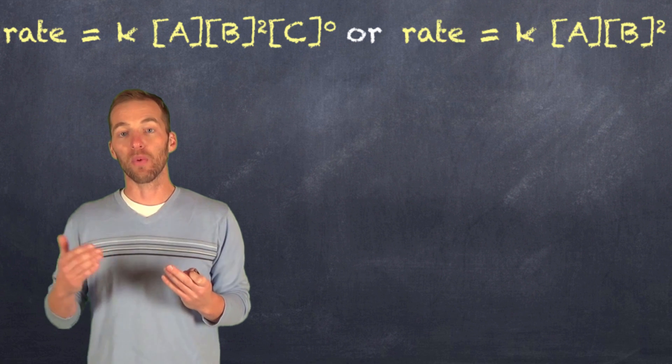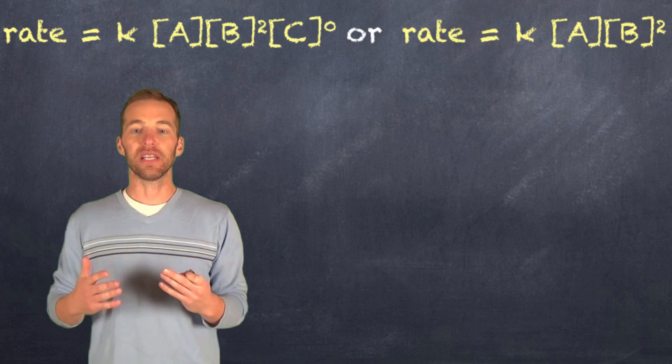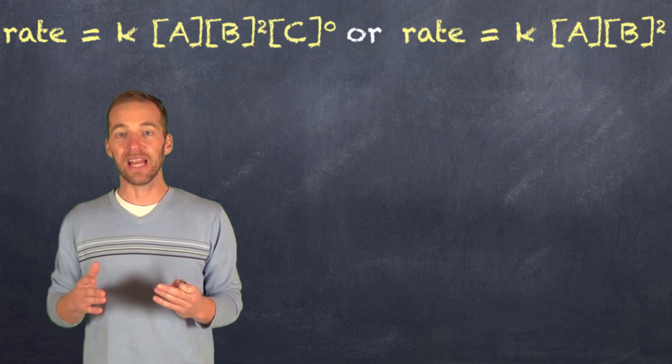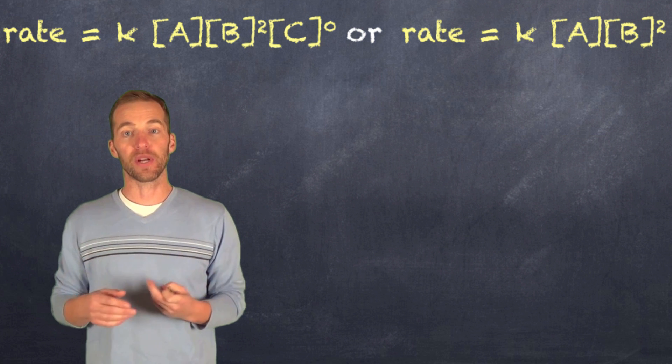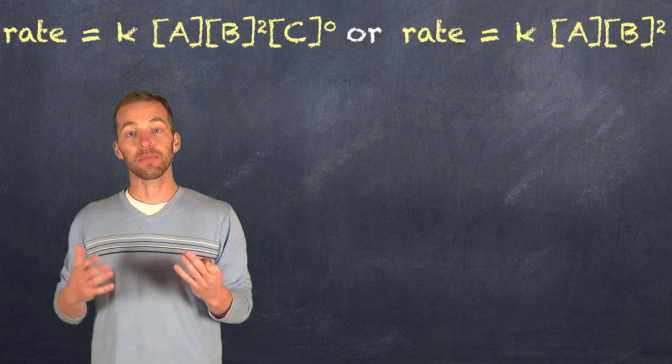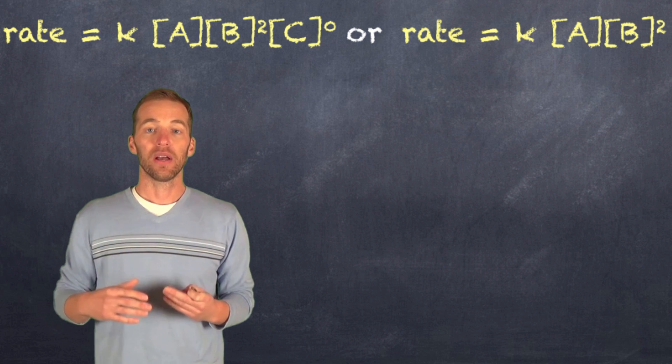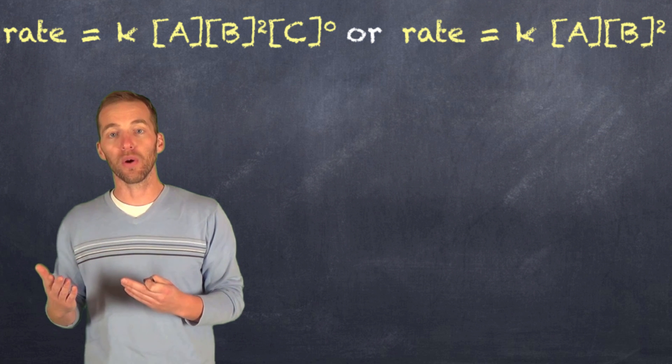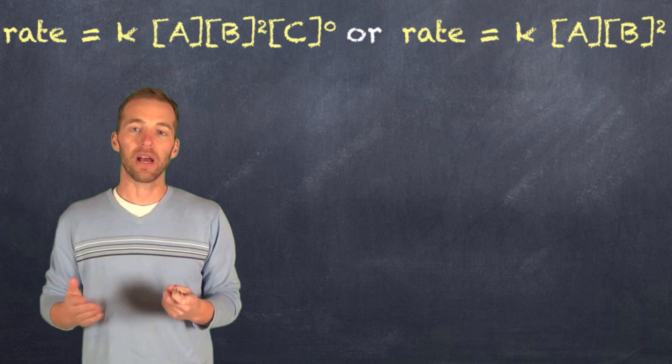So when we derive the rate law and we write out the rate law, we have rate is equal to K, the rate constant, times the concentration of A to the power of one, times the concentration of B to the power of two, and times the concentration of C to the power of zero. Now anything raised to the exponent zero is going to be one, so we can also shorten it and just leave C right out of the equation.